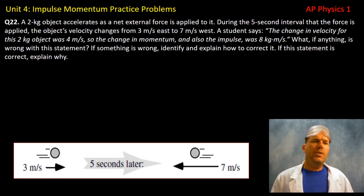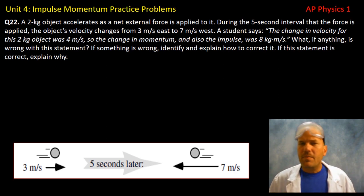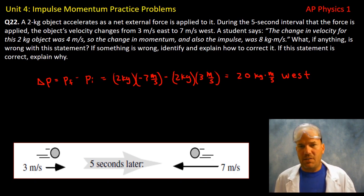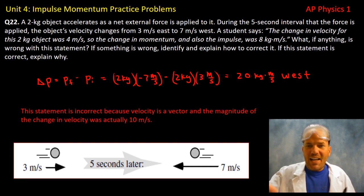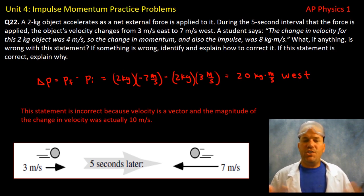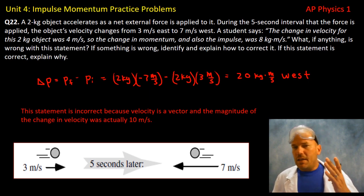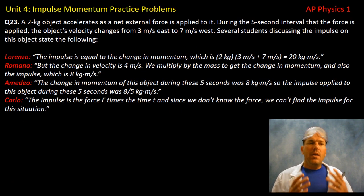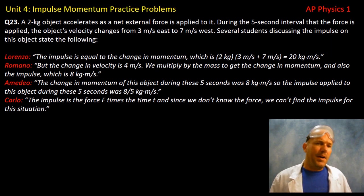Question twenty-two: another student says the change in velocity is 4 meters per second, so the change in momentum and impulse must be 8 newton-seconds. We've already established the actual impulse is 20 newton-seconds west. The change in velocity is a vector quantity; the magnitude is actually 10 meters per second. This student forgot to account for the change in direction when calculating the change in velocity.